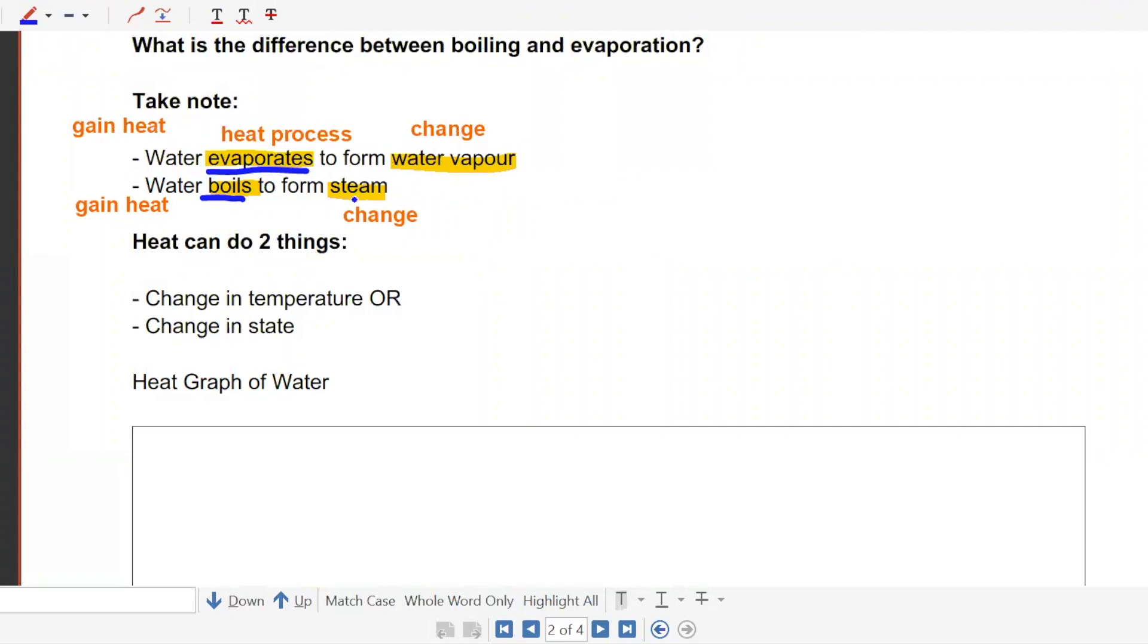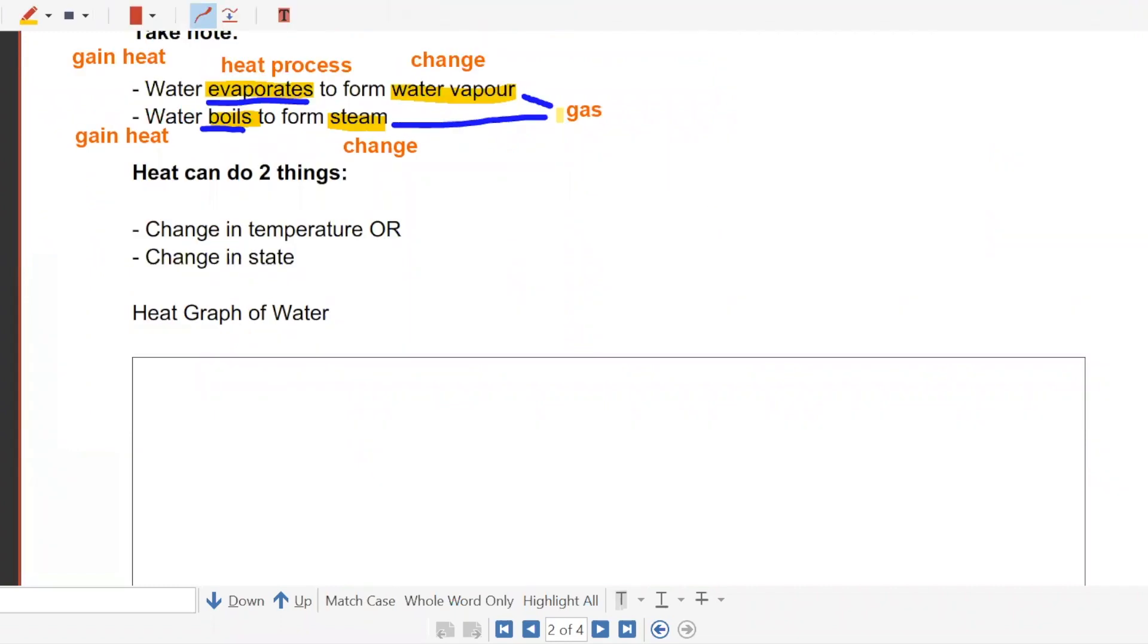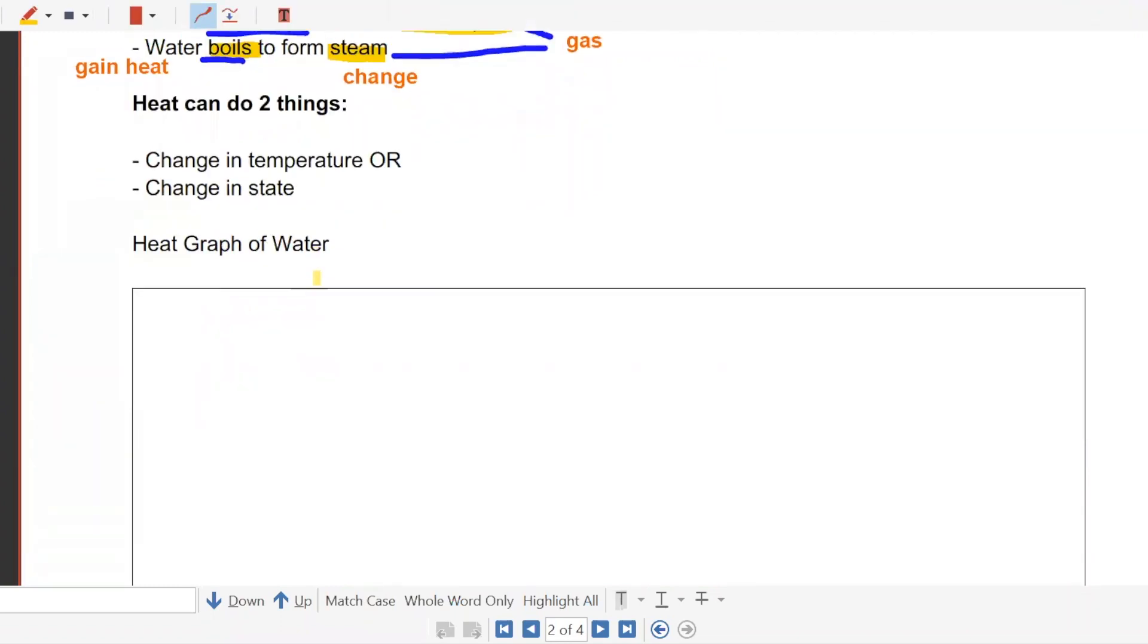So the difference between steam and water vapor. They are the same thing. Both are in gaseous form. They are both gas. You cannot see any of them. Don't tell me, I boil the kettle, I can see the smoke coming out. That is not steam. That is your water droplets. Whatever you can see is liquid already. Whatever you cannot see is gas. Steam is gas. You cannot see gas. Anybody who doesn't understand, please stop me.